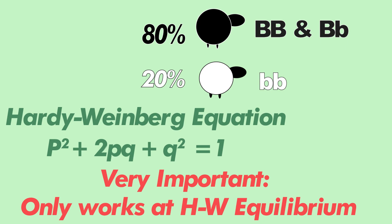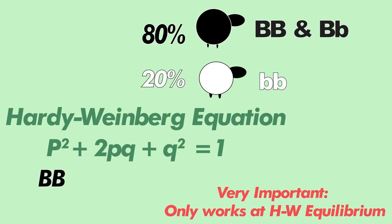p² represents the homozygous dominant trait, 2pq is the heterozygous trait, and q² is the homozygous recessive trait.